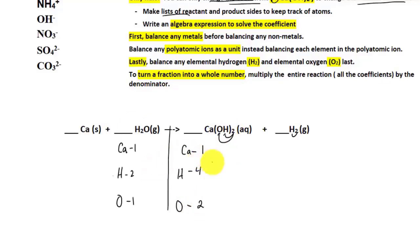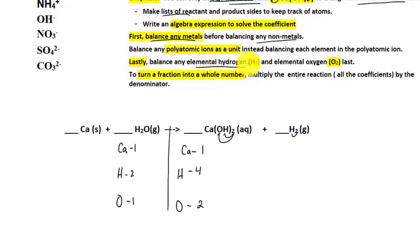This would be a violation of the law of conservation of matter. But once you balance it, you can prove the law really exists. The first type of element we always balance first is any metal, before we even touch any non-metal. The last types we balance are elemental hydrogen and elemental oxygen.